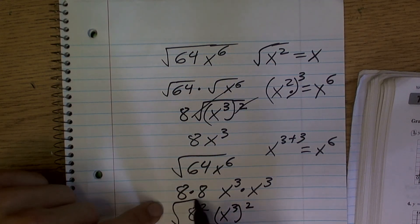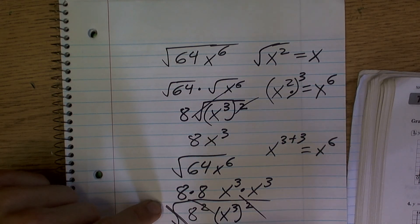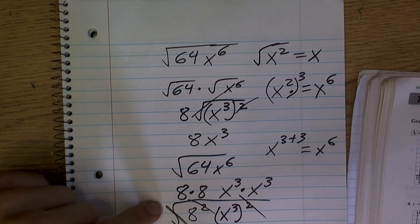Well, again, whenever you're taking the square root of those, those cancel out, and those cancel out. So that's why we're just left with 8 x cubed.